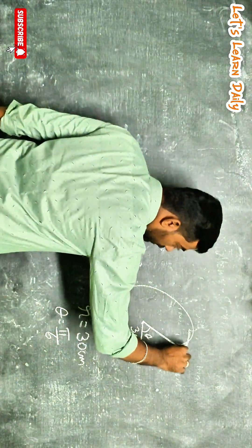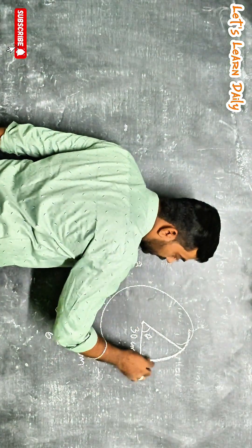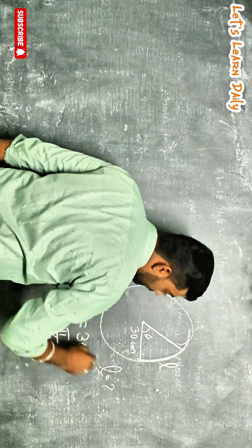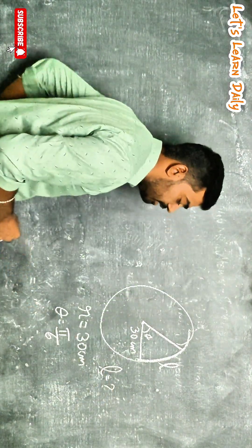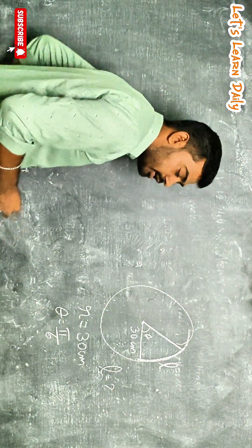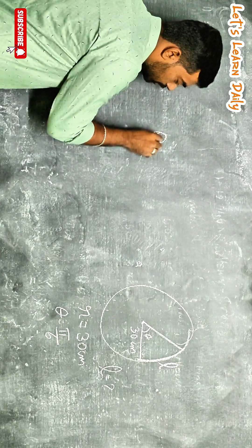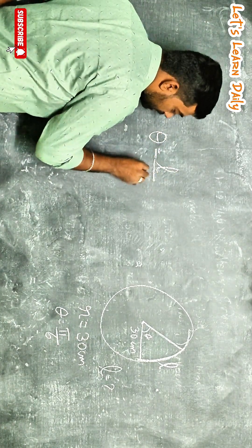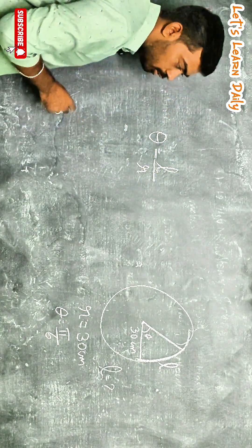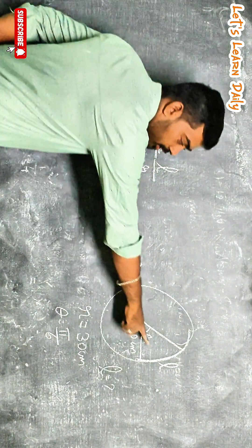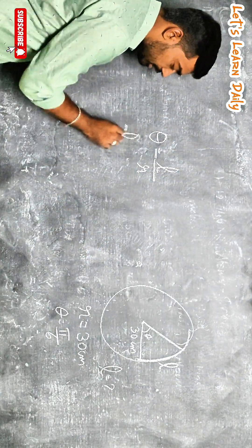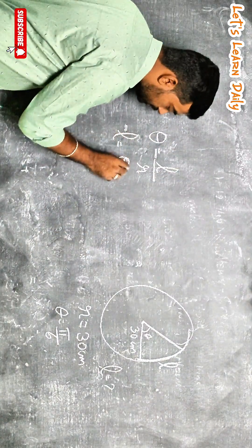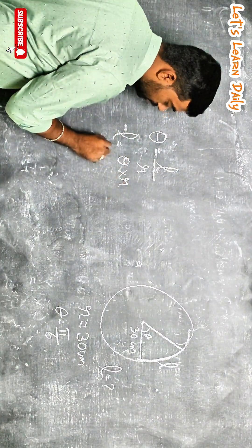What will be the length of the arc? We know theta equals L divided by R, so L equals theta into R.